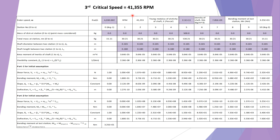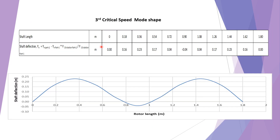For the third critical speed, select the next higher value of angular speed where the bending moment at station 10 becomes 0. This gives the third critical speed as 41,355 RPM. The third critical speed mode shape is then plotted with shaft length on the x-axis and deflection at different stations on the y-axis at the corresponding angular velocity.